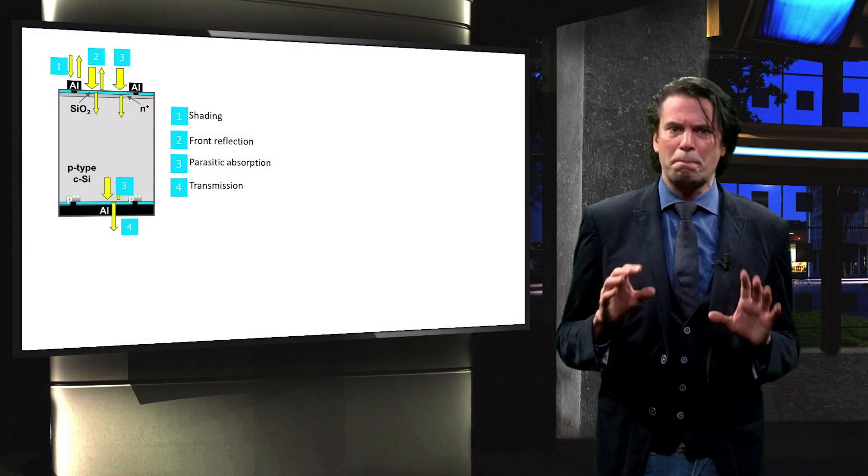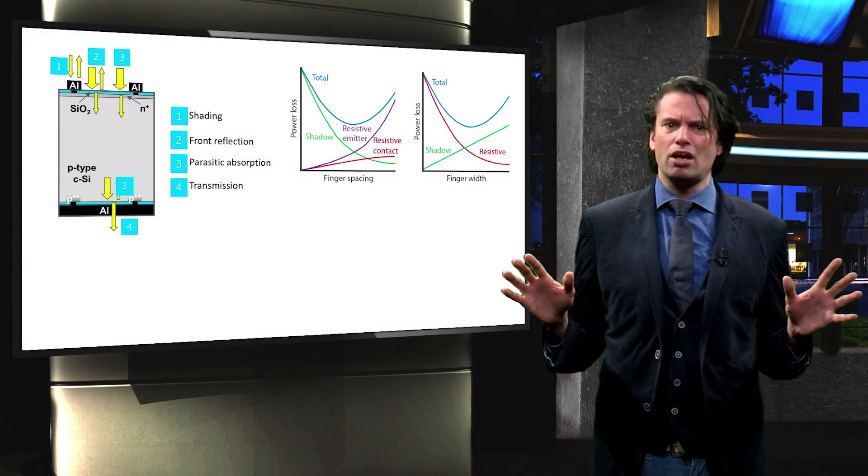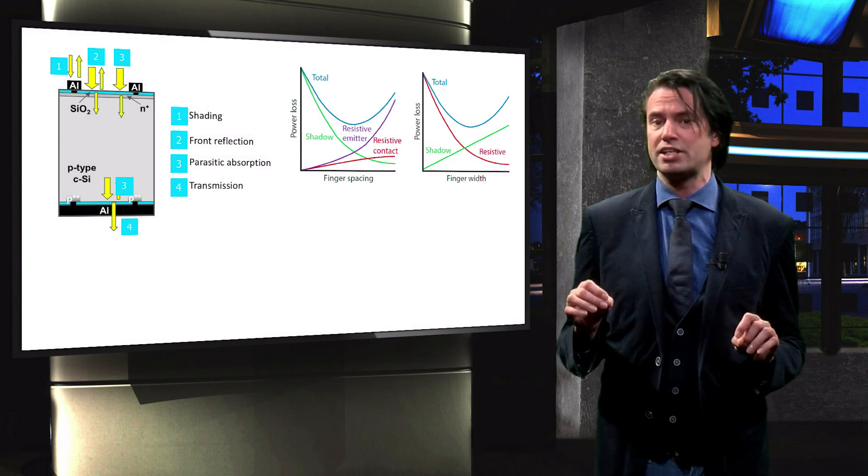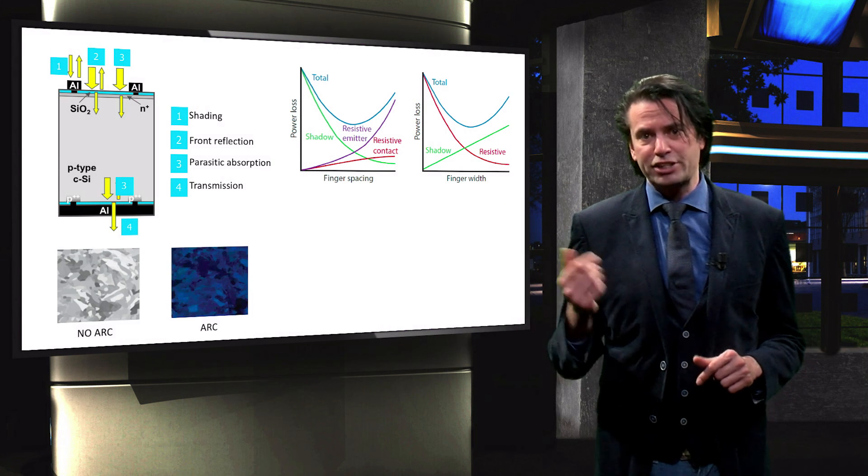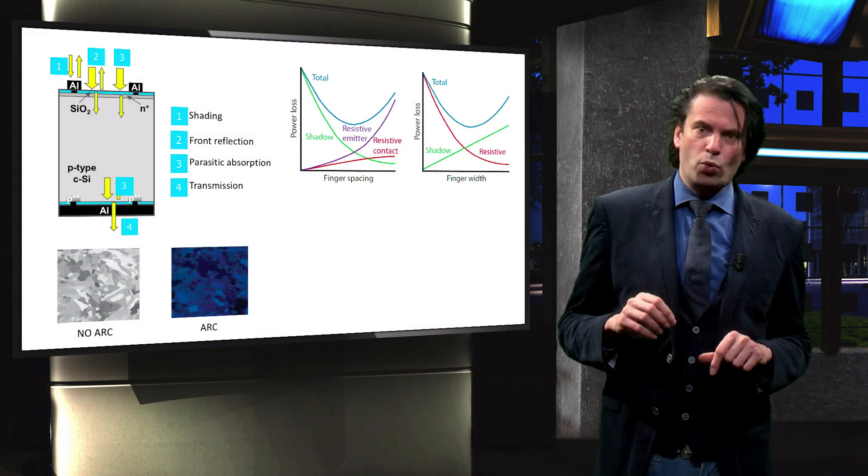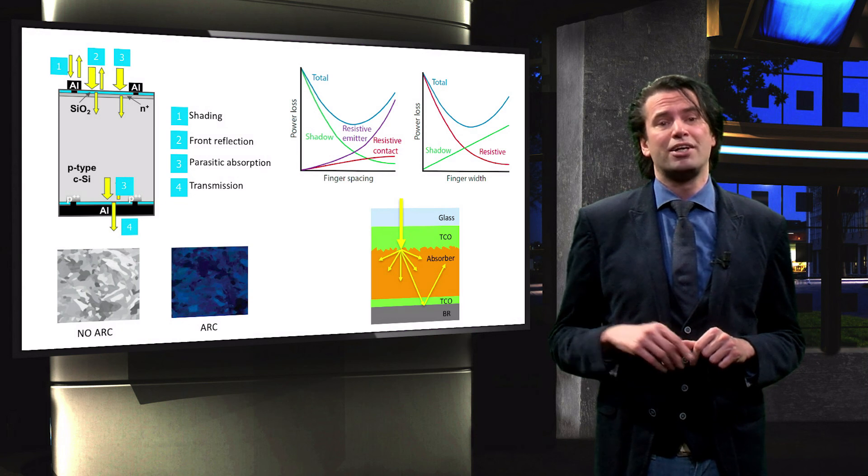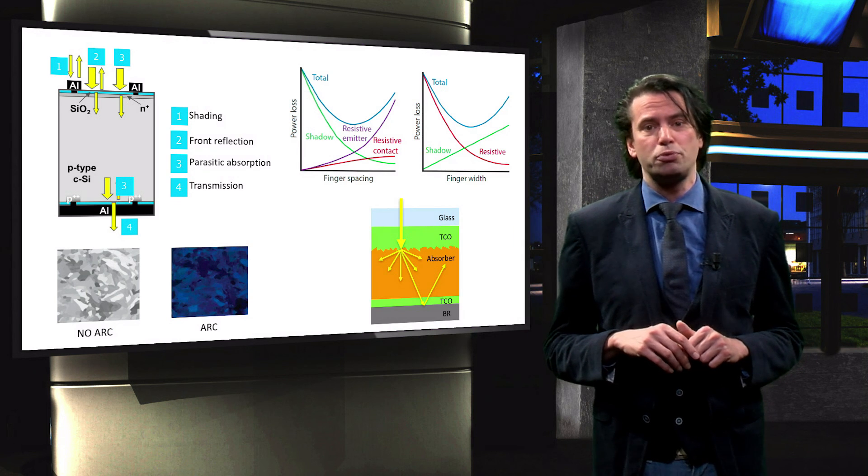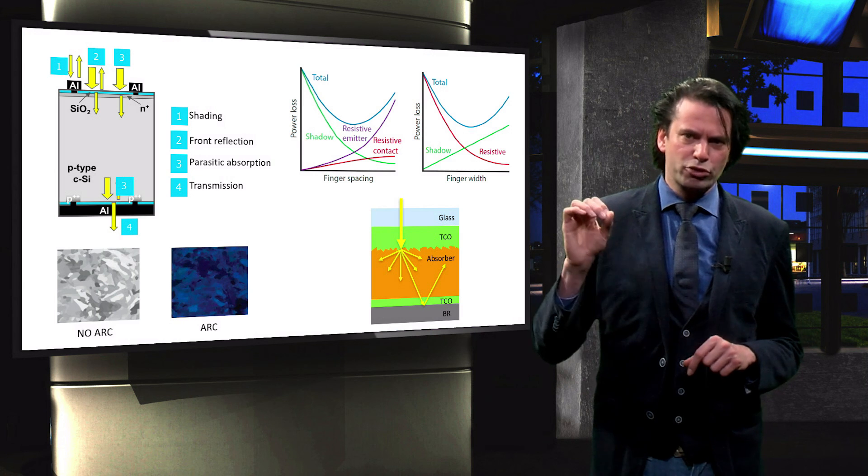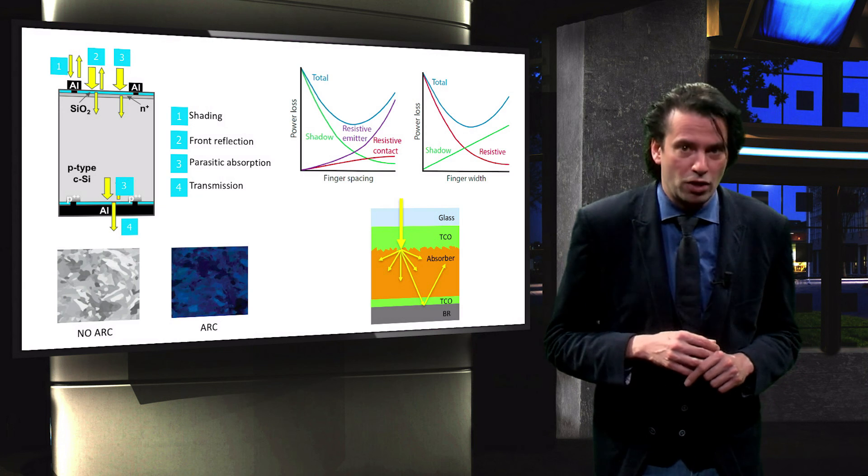We discussed the basic concepts involved in remedying these losses. The shading loss should be minimized by cleverly designing the spacing and width of the fingers. The front reflection should be remedied by an anti-reflection coating, which we will discuss in more details in the following sections. Finally, the light transmission from the solar cell should be mitigated by increasing the path length of light through the solar cell. This will also be discussed thoroughly in the next couple of sections.